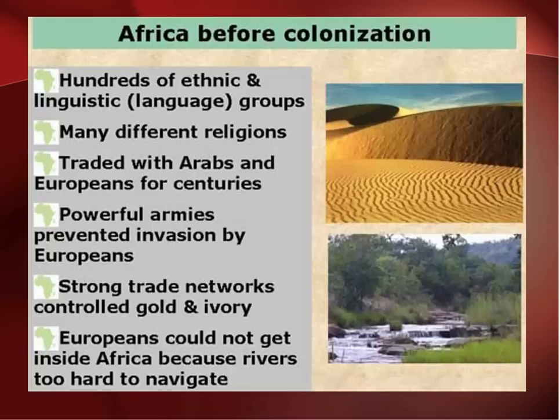But there was a lot of trade going on in Africa — strong trade networks controlling gold and ivory. The Europeans really could not get inside of Africa because the rivers are too difficult to navigate. You don't have navigable rivers; you have large plateaus that drop off, so you have these huge waterfalls, and it just doesn't make it very easy to get into the interior of the continent.